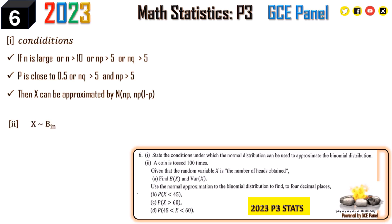For sub-part two, a coin is tossed 100 times. The random variable X is the number of heads obtained. Since they have not told us the coin is biased, the assumption is a fair coin — if the coin were biased it must be mentioned. For a fair coin, the probability of obtaining a head equals the probability of obtaining a tail, which equals 0.5. The coin has been tossed 100 times, so this gives us a binomial distribution.